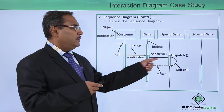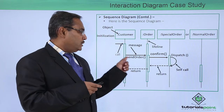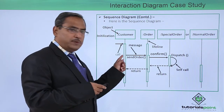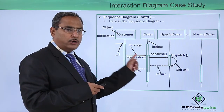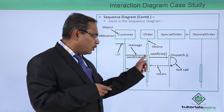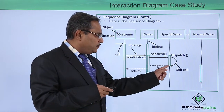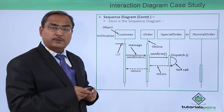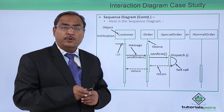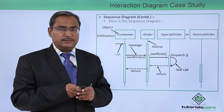During the activation period, these methods are also supposed to get executed. Send order flows from the customer object to the order object, then confirmation goes from the order object to the special order object, then dispatch occurs, and then the control is returned back. This is the sequence diagram of our case study, the order management system.